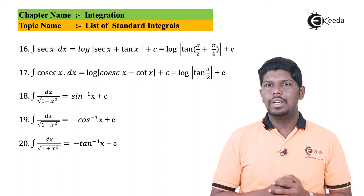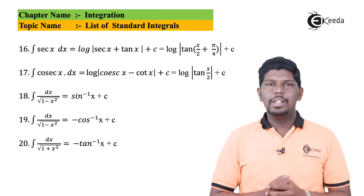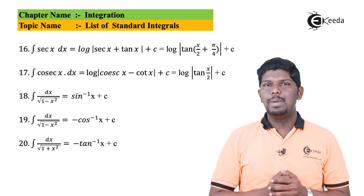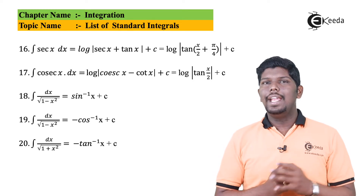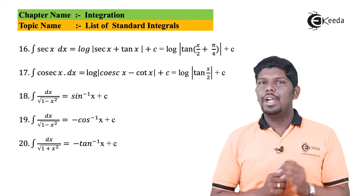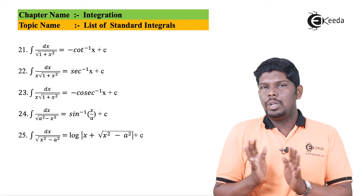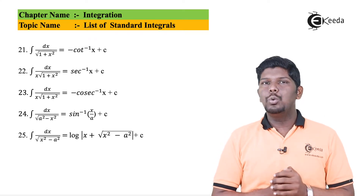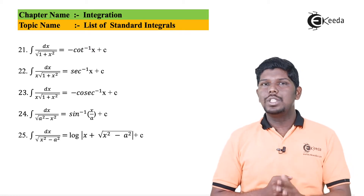Now let us see the anti-derivatives for inverse functions. Integral of 1 upon under root of 1 minus x squared is sin inverse x plus c, but changing the sign gives minus cos inverse x plus c — so there are two answers. Integral of 1 upon 1 plus x squared gives tan inverse x or minus cot inverse x plus c. Integral of 1 upon x times under root of x squared minus 1 gives sec inverse x plus c or minus cosec inverse x plus c.